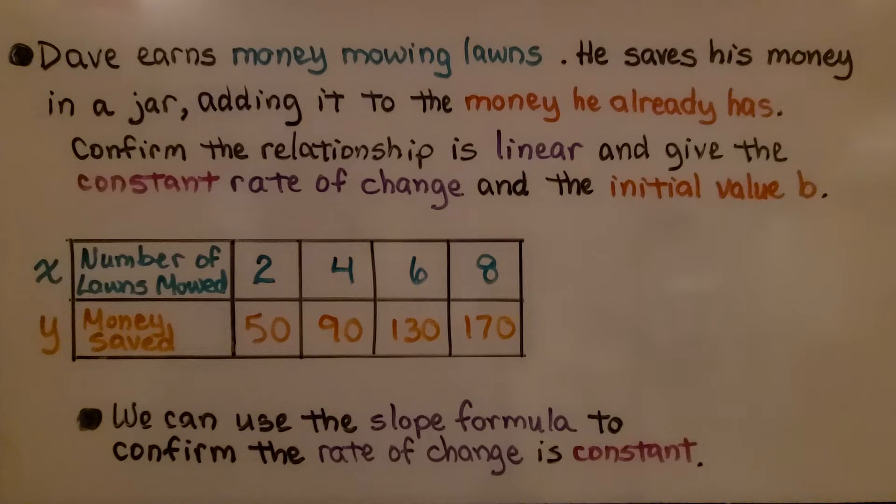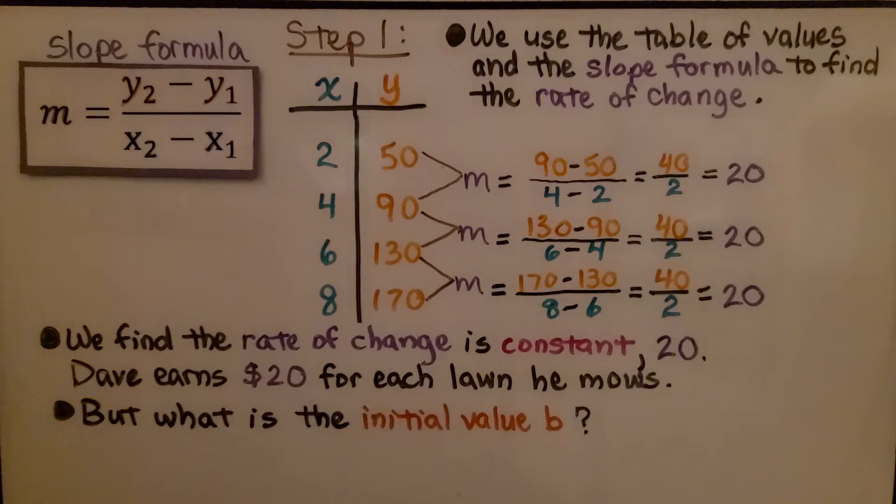We can use the slope formula to confirm the rate of change is constant. By using the slope formula, not only will we be able to confirm that the rate of change is constant, but we'll be able to find the slope of the line. We use the table of values and the slope formula to find the rate of change.